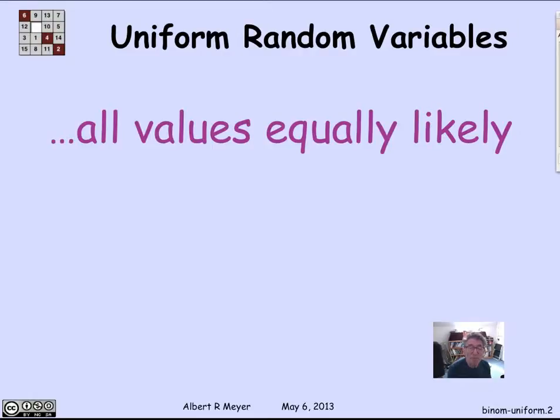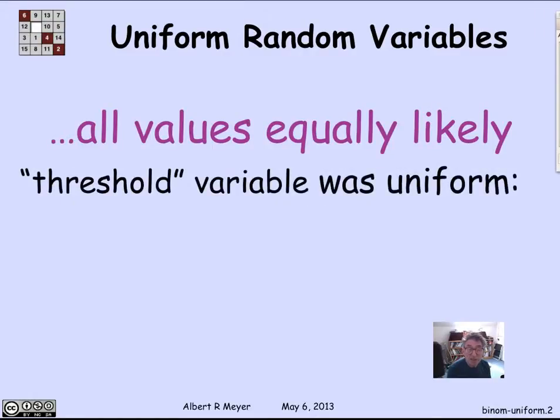A uniform random variable means that all the values that it takes, it takes with equal probability. So the threshold variable z took all the values from 0 to 6 inclusive, each with probability 1/7. So it was a basic example of a uniform variable.